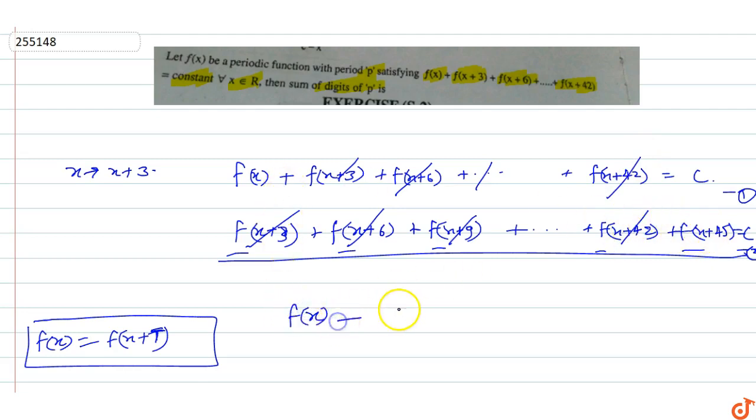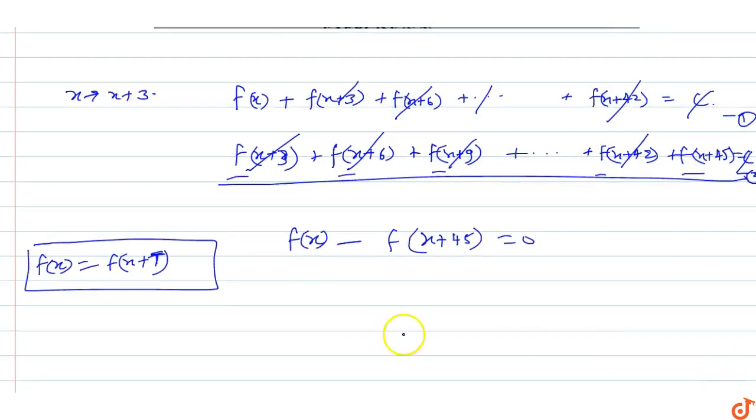This equals 0, because C minus C cancels out. So we get f(x) equals f(x+45).